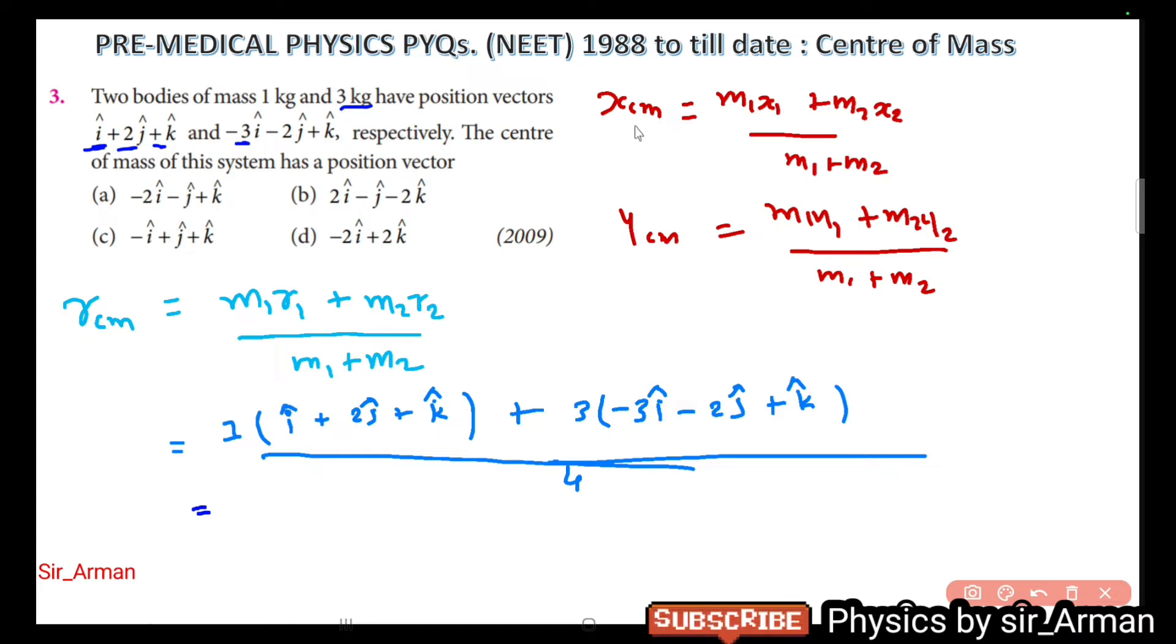You can just consider m1 mass, that is 1 kg, into its position vector plus m2, that is 3 kg, into its position vector. Similarly for y_cm and similarly for z_cm. Either you can find this center of mass individually in x, y, and z axis, or you can directly calculate by this method—that is r_cm, where r represents all 3D vectors x, y, and z.